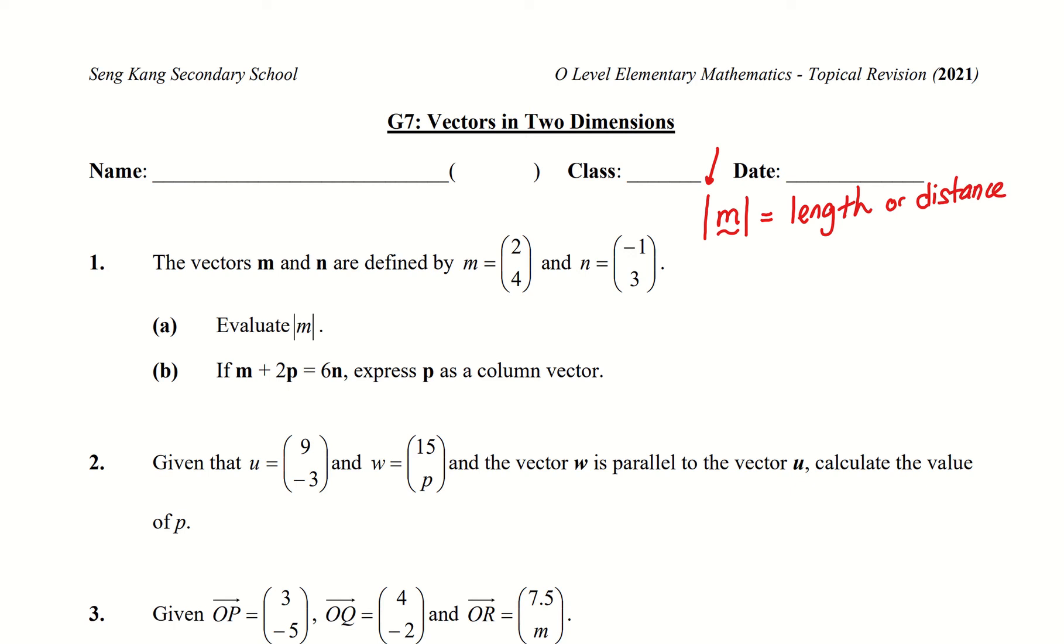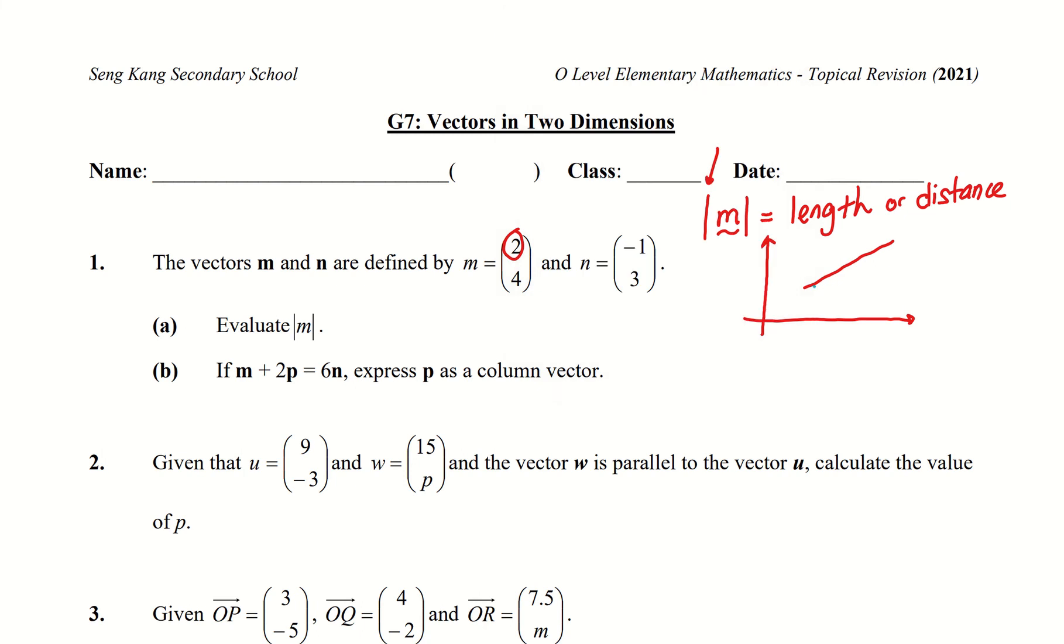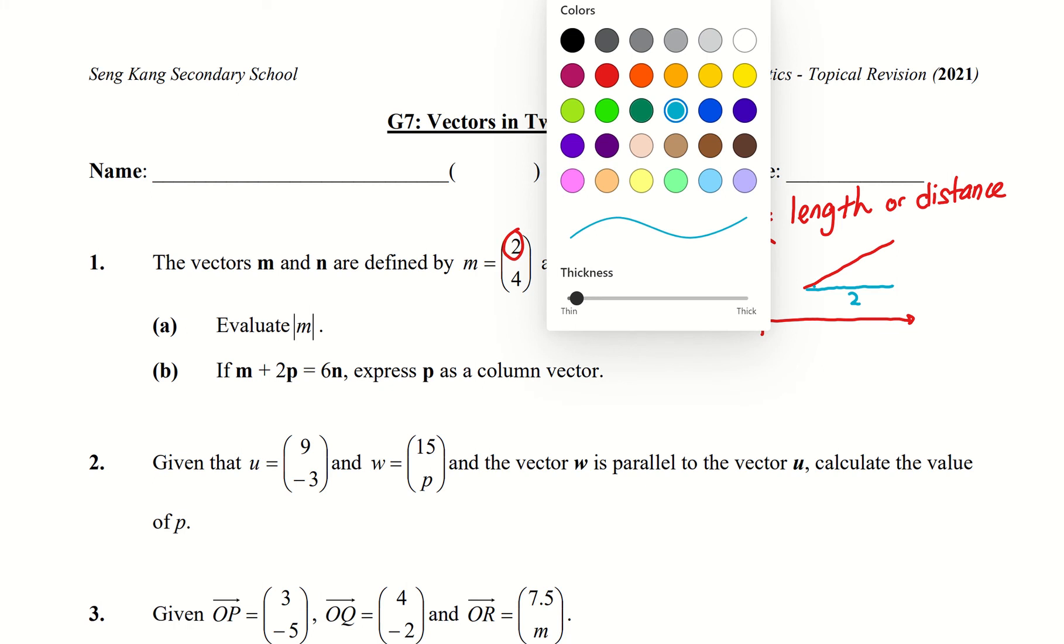And how do we calculate this? We will need to look at vectors and what it means. Now if I have a vector m, this vector m says two units on the left or right, so you have this distance here which is two. The other one...